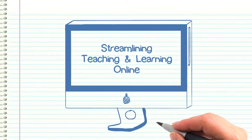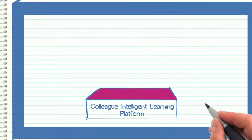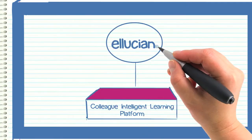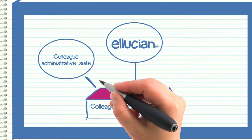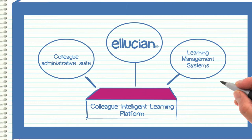The Colleague Intelligent Learning Platform works by integrating seamlessly with other great products from Ellucian, like our Colleague Administrative Suite, and with leading learning management systems on the market today, with ease,